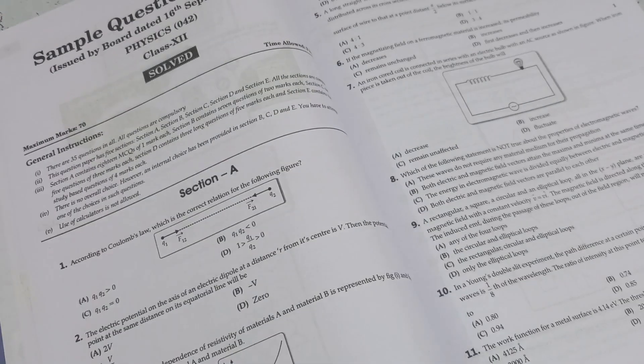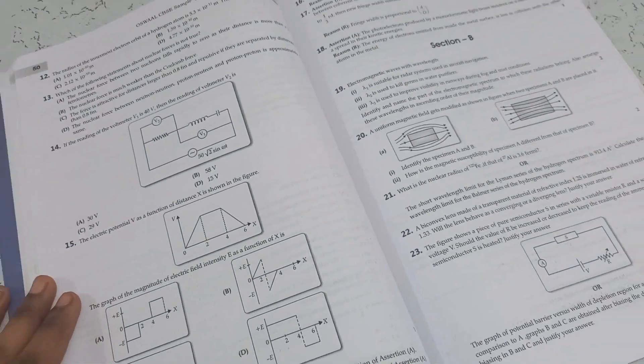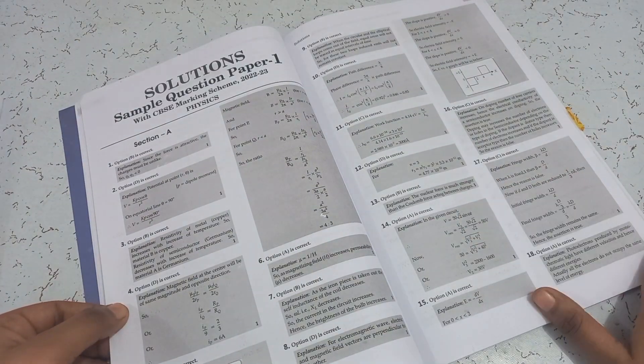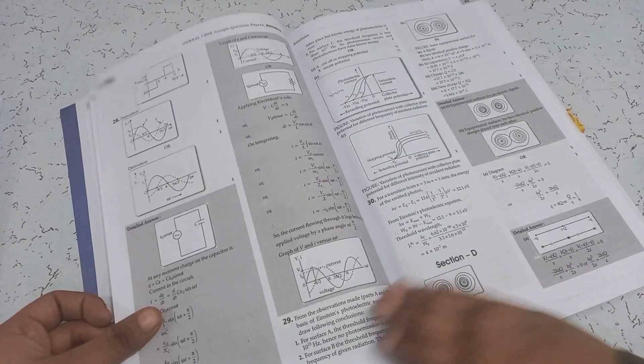At the starting of the question paper, section A contains MCQs, then 2 markers, then 3 markers and then even case-based questions. And the solution of every single question paper you solved with detailed answers.